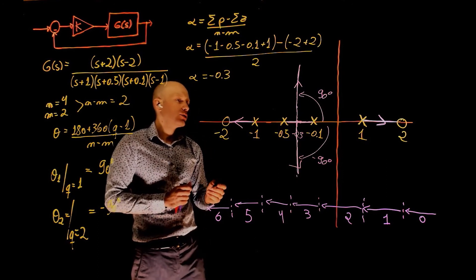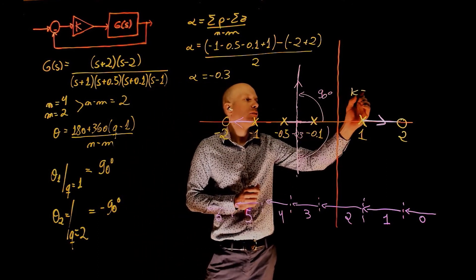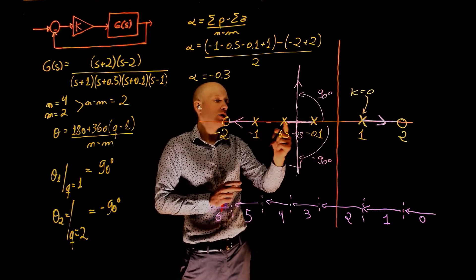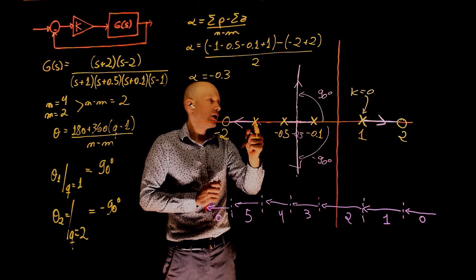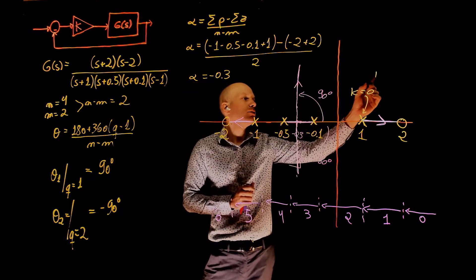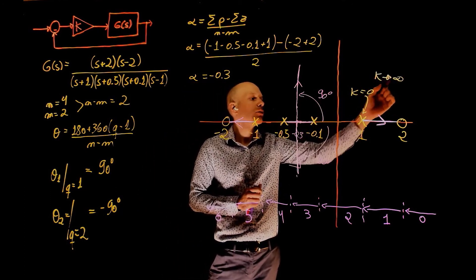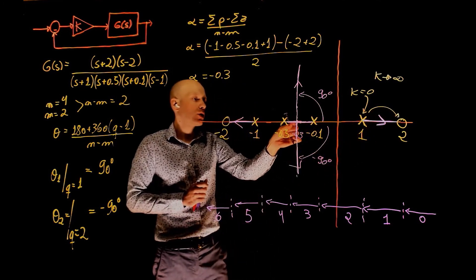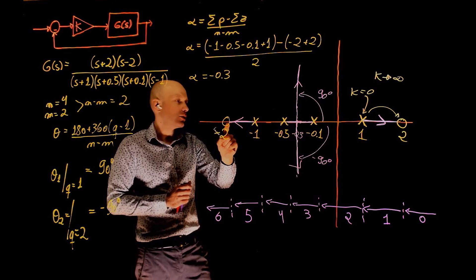When k equals 0, this pole is here, this pole is there, this pole is here, and this pole is there. When now k tends to infinity, this pole goes to that zero, these two poles come together and break to infinity, and this pole goes to this zero.